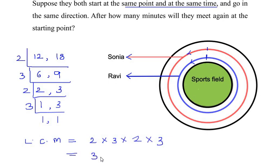That means Ravi and Sonia are going to meet at the same point after 36 minutes.